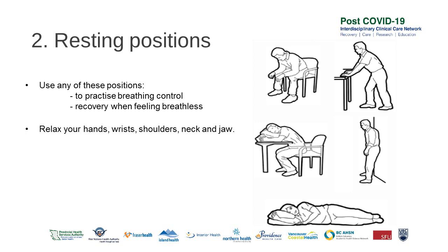Resting positions can be used to help you practice your breathing control or when you need to perform SOS for SOB. Please refer back to Module 1 for further details on SOS for SOB. Use any of these positions to help you practice your breathing control or to recover your breath when you get breathless. Leaning forward helps to offload the diaphragm, allowing more room for it to contract and move air in and out of the lungs. Sitting upright in a chair with supporting arms — for many people, it is easier to breathe in this position than in bed.